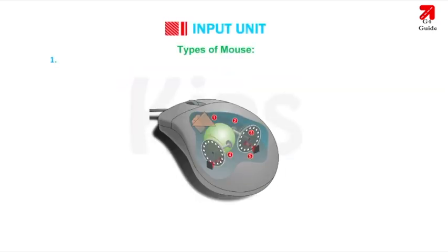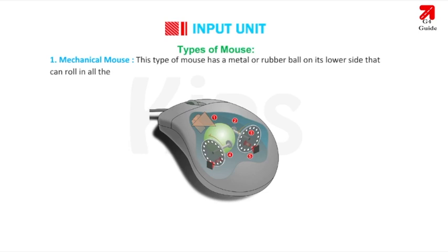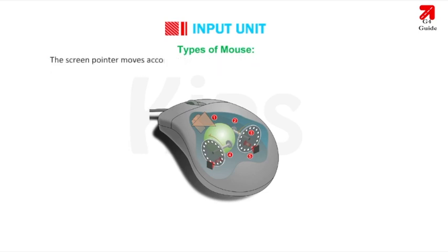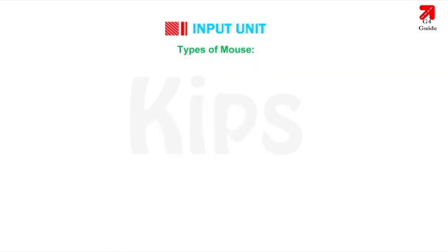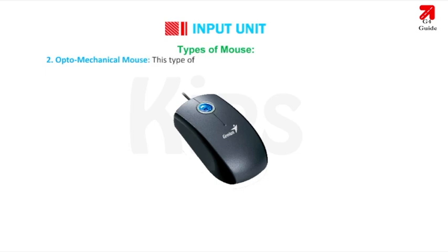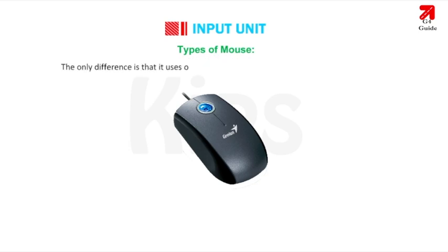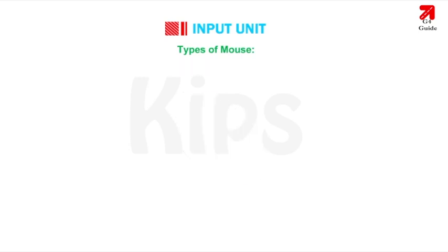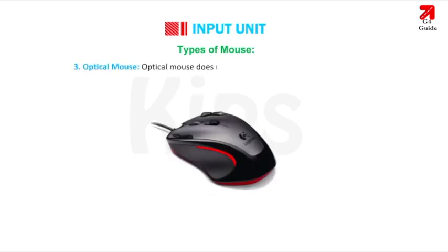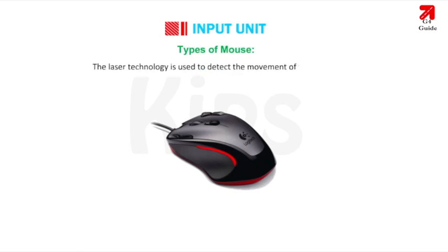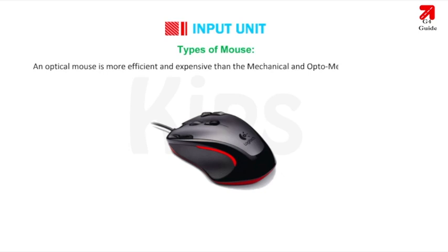Types of Mouse: 1. Mechanical Mouse — has a metal or rubber ball on its lower side that can roll in all directions. The screen pointer moves according to the ball's movement detected by mechanical sensors. 2. Optomechanical Mouse — similar to the mechanical mouse but uses optical sensors to detect ball movement. 3. Optical Mouse — has no mechanical moving parts; uses laser technology to detect movement. It is more efficient and expensive than the other types.